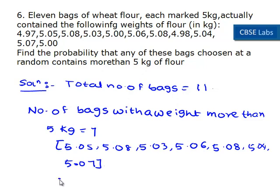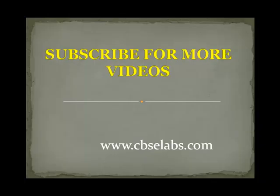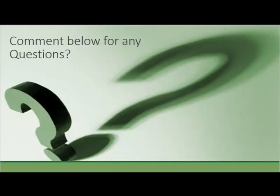Here we need to find the probability that any of these bags chosen at random contains more than 5 kg of flour. The probability is equal to number of favorable outcomes divided by total outcomes. Therefore, the probability is equal to 7 upon 11, which is the end of the solution.